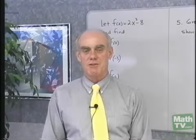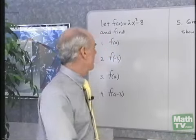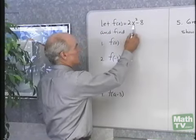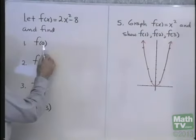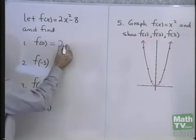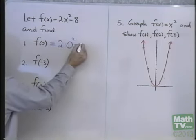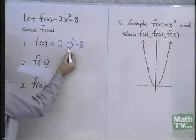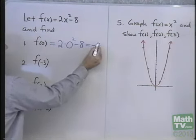I want to review some of the work we've done previously with function notation. Suppose that f(x) is equal to 2x squared minus 8. Let's find f(0). Well, remember, this is just a substitution problem. 2 times 0 squared minus 8, so that's 2 times 0 subtract 8, which is negative 8.